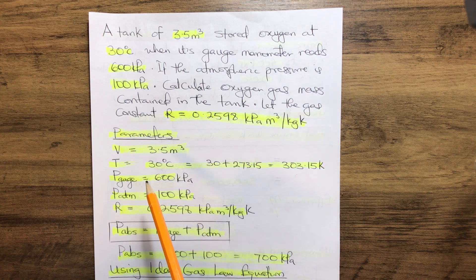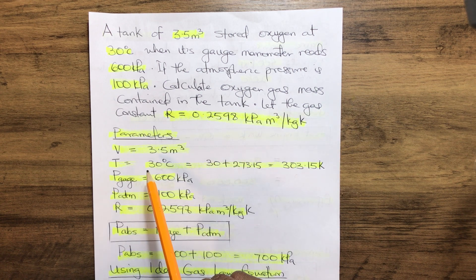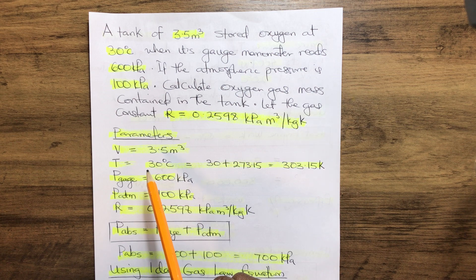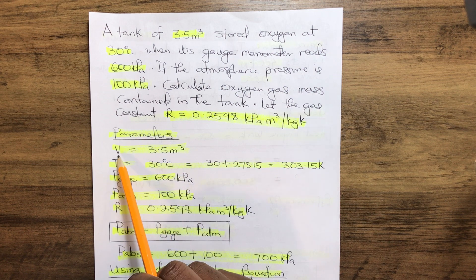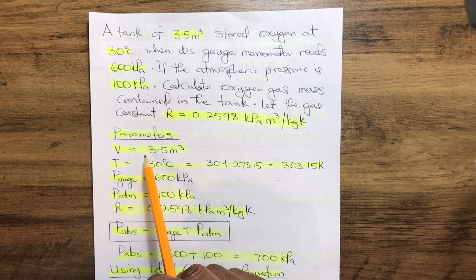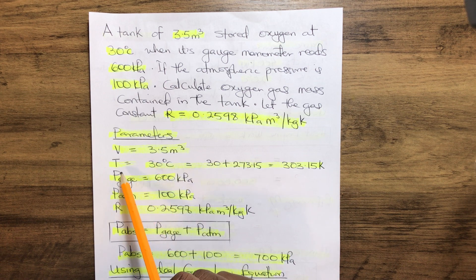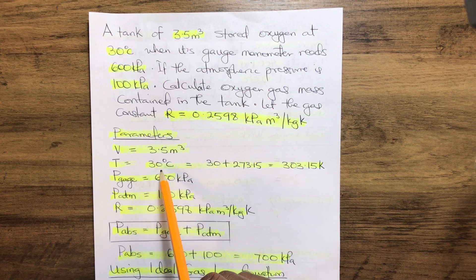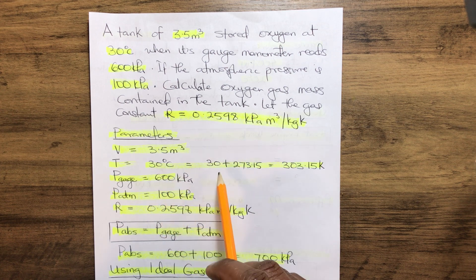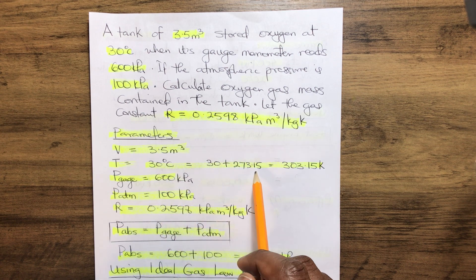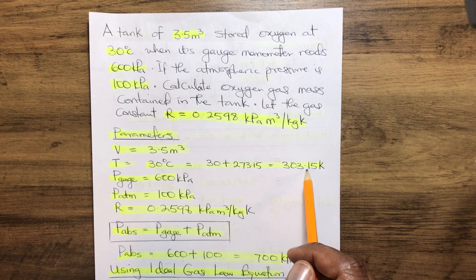Now let's pull out the parameters from our question. We have volume V = 3.5 m³. We have temperature T = 30°C, which can be converted to kelvin to be 303.15 K.